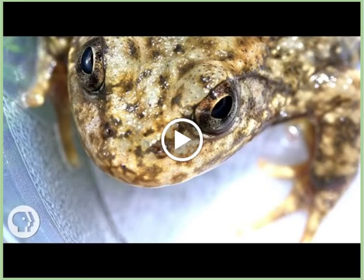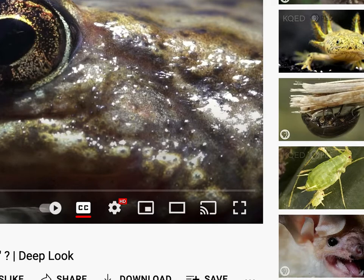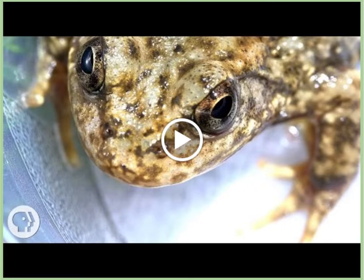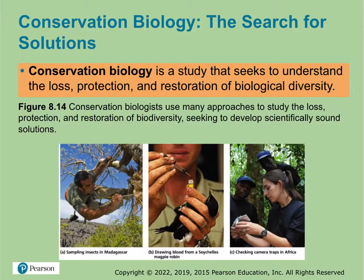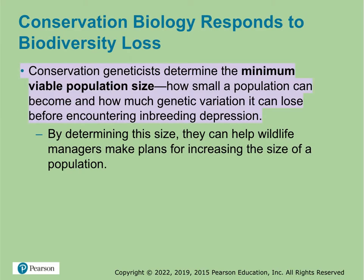This video talks about whether the frog apocalypse can be stopped by a new vaccine. I recommend you watch that video — I think it is great. Conservation biology is basically studying the loss, protection, and restoration of different species and their biodiversity.